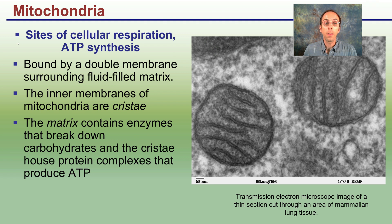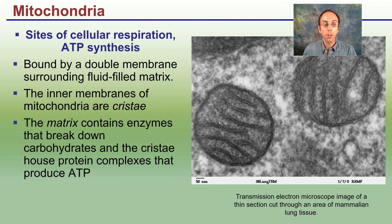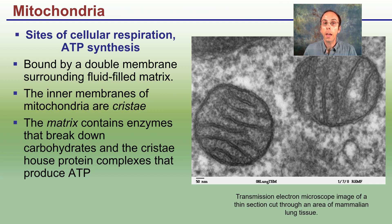The mitochondria is the site of cellular respiration and ATP synthesis. Calling it the 'powerhouse of the cell' understates what it actually does. Viewed under a transmission electron microscope, you can see the double membrane, the cristae folds, and the enzymes inside that help break down carbohydrates and produce ATP, which is the energy currency of all cells and vital for life. Keep in mind that animal cells and plant cells both have mitochondria, while only plant cells and algae have chloroplasts.